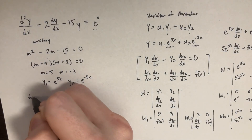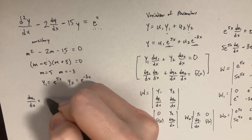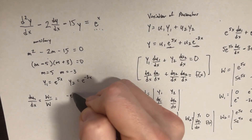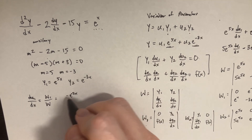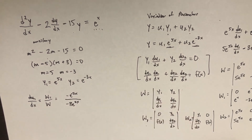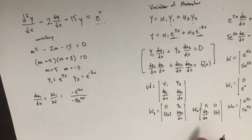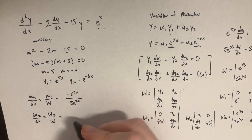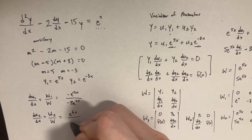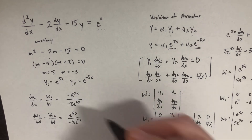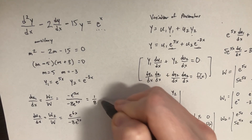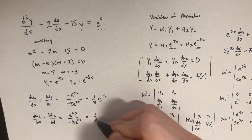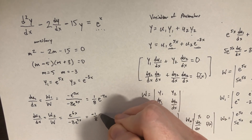Our goal is to solve for du1/dx = W1/W = -e^(-2x) / (-8e^(2x)), and du2/dx = W2/W = e^(6x) / (-8e^(2x)). These simplify to du1/dx = (1/8)e^(-4x) and du2/dx = (-1/8)e^(4x).